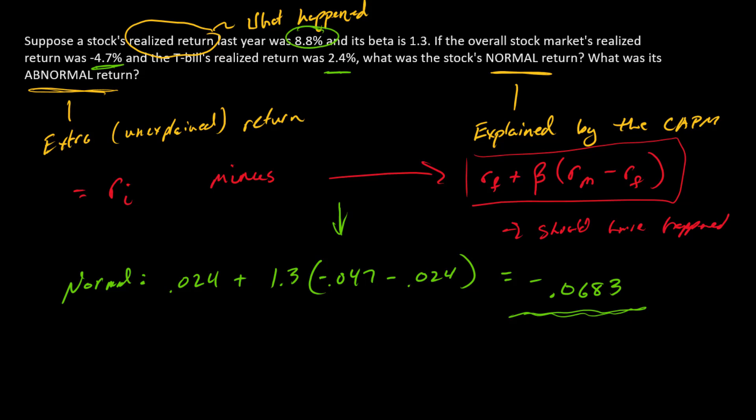The stock actually had a positive return. So its abnormal return is whatever is not explained by the market. So 0.088 minus negative 0.0683. So that's a huge positive abnormal return of 0.1563, right?